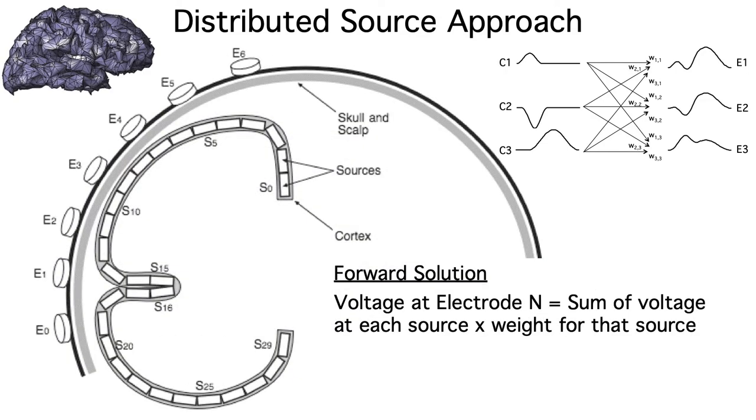Here's a simplified view of the patches in a single slice through the head. Just as in our original conceptualization, the voltage at a given electrode is a weighted sum of all the sources at a given time point. For example, the voltage at electrode 5 is computed by multiplying the activation at source 0 by the weight between that source and electrode 5, plus the activation at source 1 multiplied by the weight between that source and electrode 5, etc.